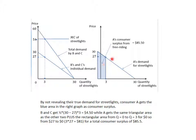Now let's look at A. A's consumer surplus from free riding covers this entire space — they're paying absolutely nothing for the three units. We calculate their consumer surplus as this triangular space plus this rectangular space. The triangular space is $4.50, and the rectangular space is $27 times three, which is $81. So A gets $85.50 in consumer surplus, while B and C each get $4.50. This gives A an incentive to free ride.